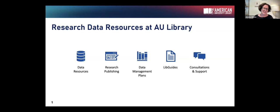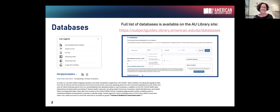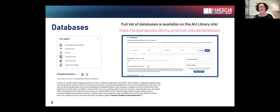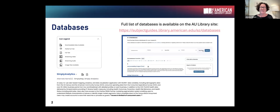We have subject librarians, each assigned to a special subject and liaised to different colleges. As a faculty member, you have a librarian assigned to your college and probably someone specific to your discipline. They collect databases — we have currently 635 of those. If you go to our A-to-Z database website, you can search by filtering by type, and 'data' is a type of database — those are databases with downloadable data available.